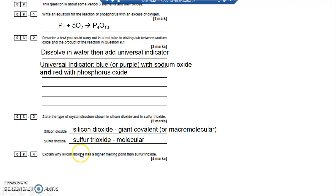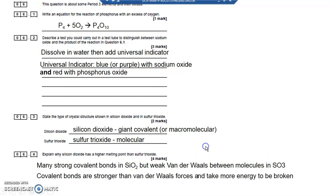Explain why silicon dioxide has a higher melting point than sulfur trioxide. I think I've already explained that. Many strong covalent bonds are actually in the structure of SiO2, held in a large giant covalent or macromolecular structure. Weak van der Waals bonds between the molecules in SO3, and therefore the covalent bonds are stronger than van der Waals bonds. More energy to break them.